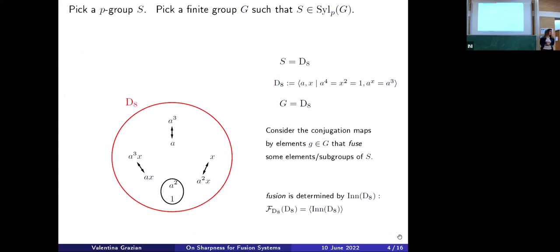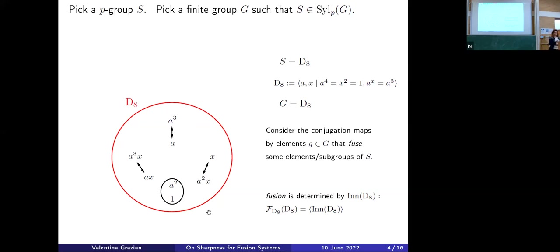Let's pick a p-group. I chose the prime 2 and the dihedral group D8 of order 8, generated by two elements a and x, where a has order 4, x has order 2, and a conjugated by x is a-inverse. We pick the group G containing D8 as a Sylow 2-subgroup — well, G is D8 itself. The fusion maps — conjugations by elements of G, that is D8 — are the black maps in this picture. So a is conjugated to a³ via conjugation by x. And ax is conjugated to a³x, and x is fused to a²x. The elements 1 and a² are in the center of D8, so conjugating by any element of D8 gives the identity — they are only fused to themselves.